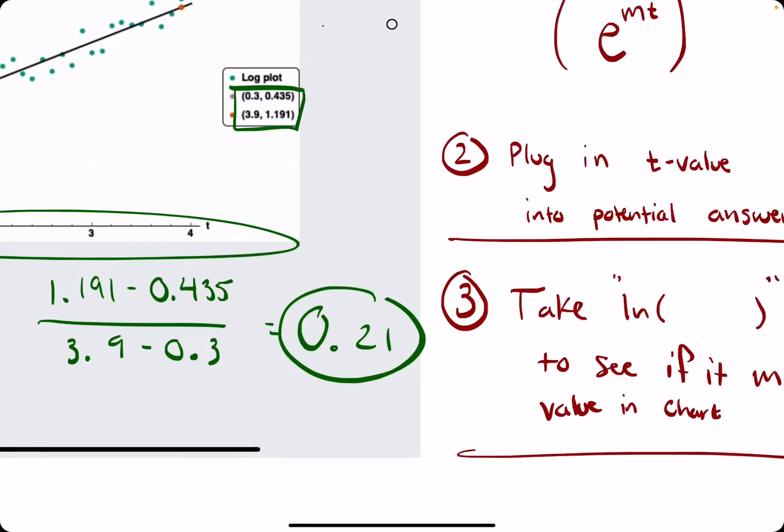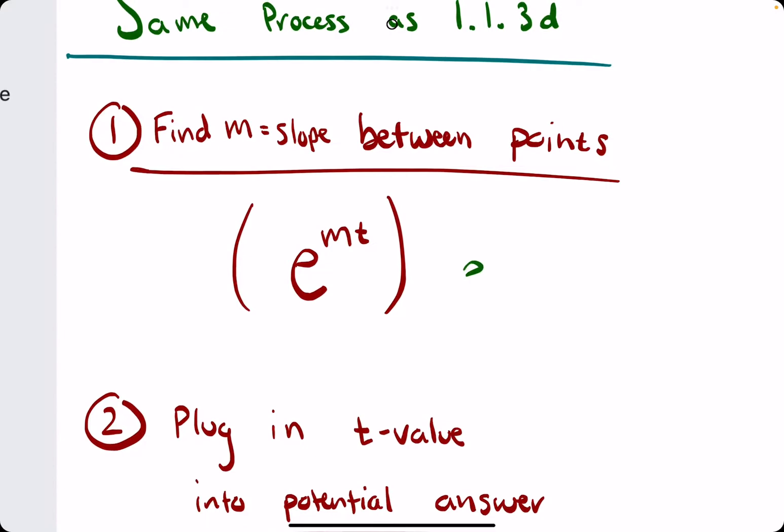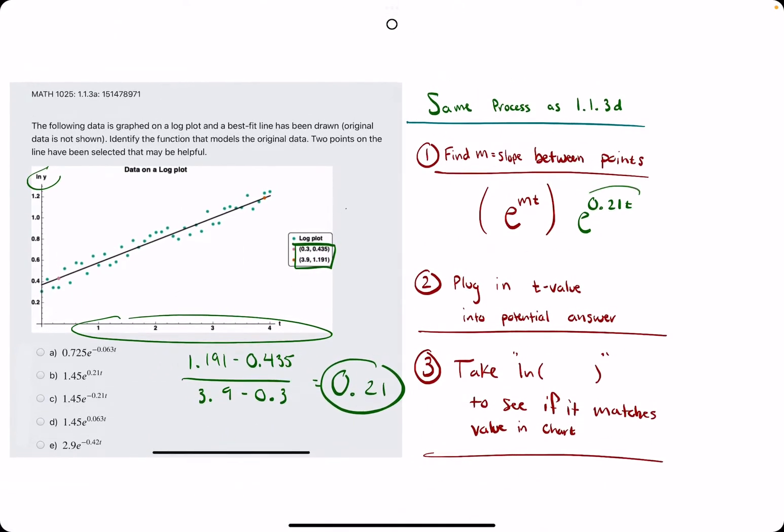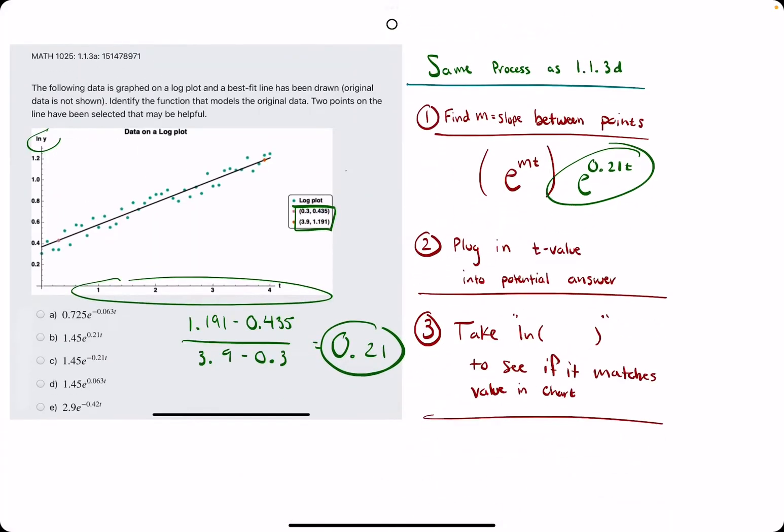And what does this mean? This slope, this m value, should show up in our function in the exponent. We have e to the 0.21t, and that term should show up in our answer.